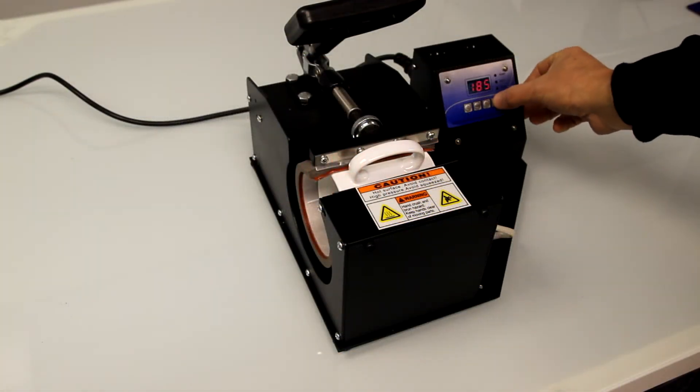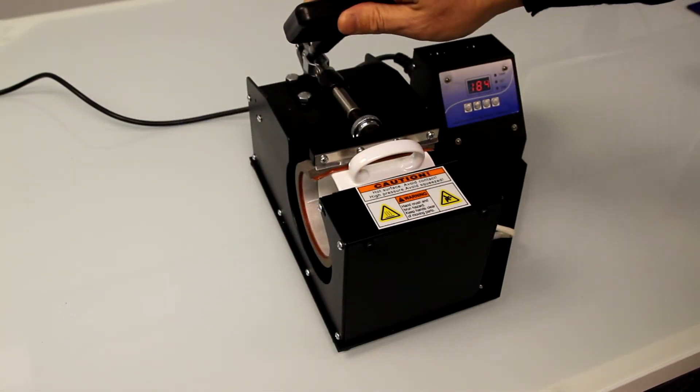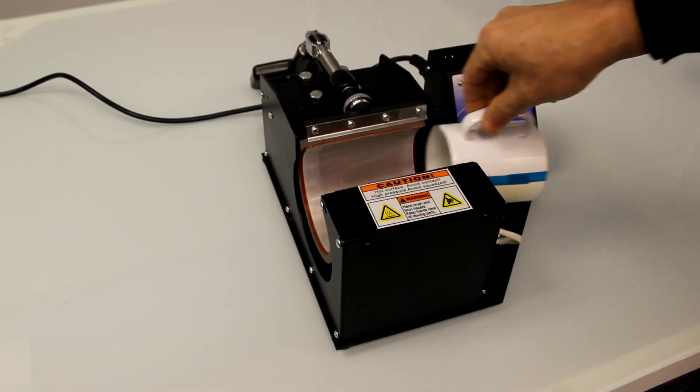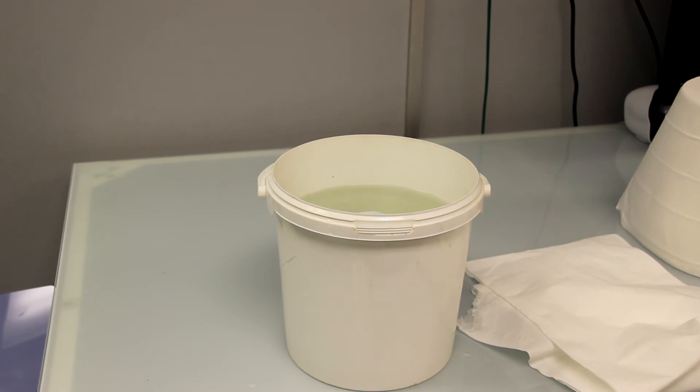Press the square button again to stop the alarm. Carefully remove the mug by the handle only and immerse in a container of room temperature water.